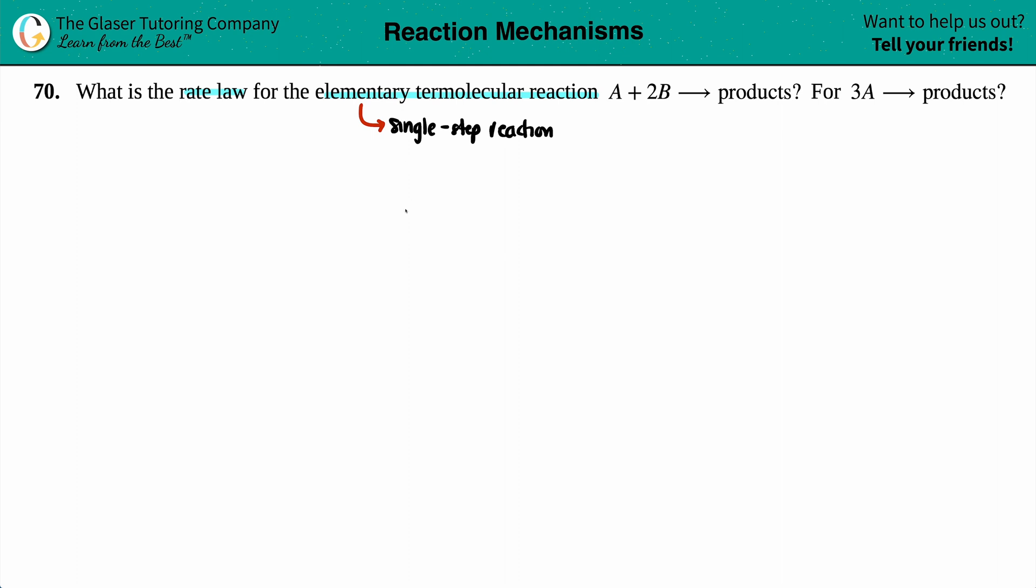So in this case, when we're going to do the rate law for A plus 2B yields products, since it was classified as an elementary reaction, what you see is what you get. You only have 1A, 2Bs, and it's just going to make a product or whatever it is.